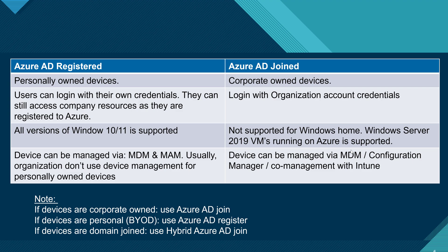Azure AD Joined also supports Windows Server 2019 virtual machines on Azure. For Azure AD Registered devices, MDM and MAM are both available, but organizations typically don't use MDM for personal devices — they prefer MAM to control applications and prevent data copying. For Azure AD Joined devices, the organization has complete control via MDM like Intune, and can also use co-management with Configuration Manager. In summary: corporate devices use Azure AD Join, personal devices use Azure AD Register, and domain-joined devices needing Azure services use Hybrid Azure AD Join.